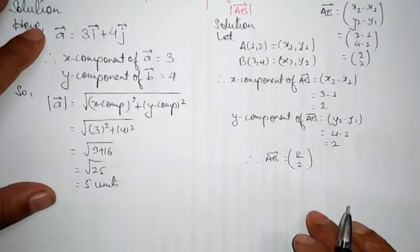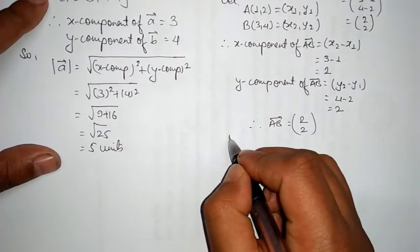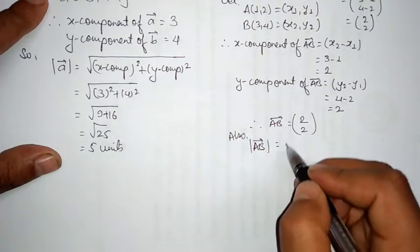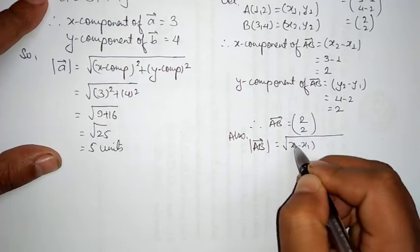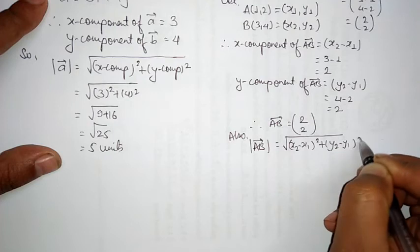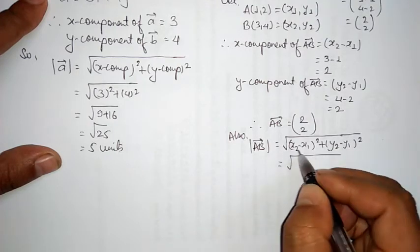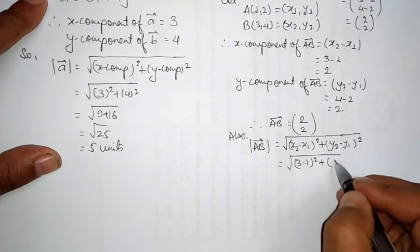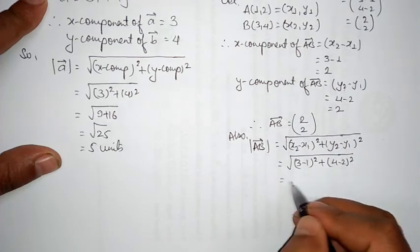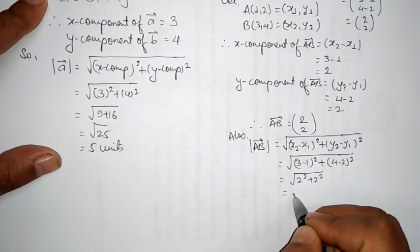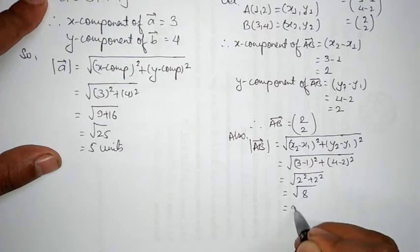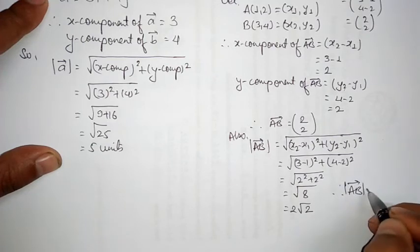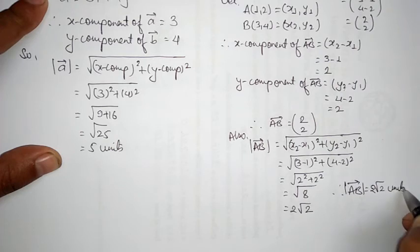According to the question, we also need to find the magnitude of vector AB. The magnitude of vector AB is given by the square root of (x2 minus x1) squared plus (y2 minus y1) squared. That is the square root of (3 minus 1) squared plus (4 minus 2) squared, which equals the square root of 2 squared plus 2 squared, equals the square root of 4 plus 4, equals the square root of 8, which equals 2 root 2 units. Therefore, the magnitude of vector AB equals 2√2 units.